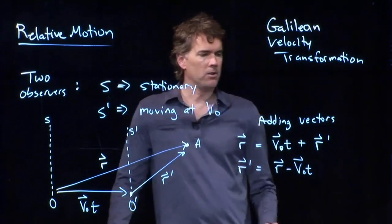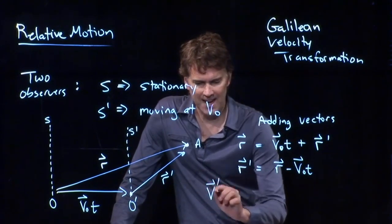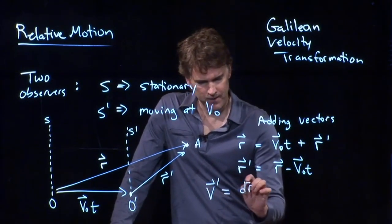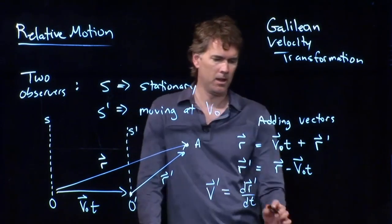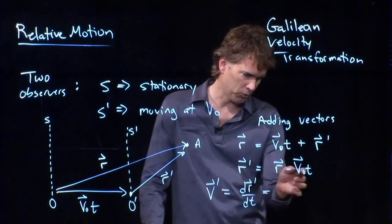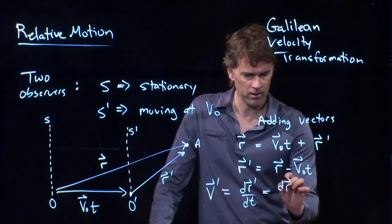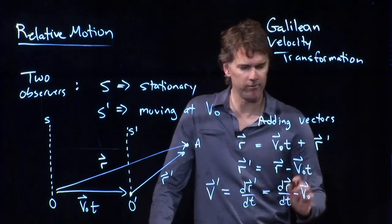And now you can solve for V prime, right? What is the velocity observed in the moving frame? It's just the derivative of R prime with respect to T. And so I need to take a derivative of this thing. What do I get? I get DR DT minus V naught.